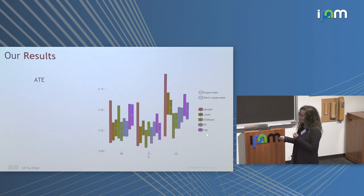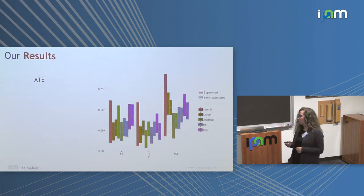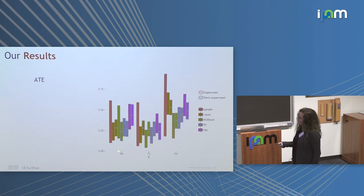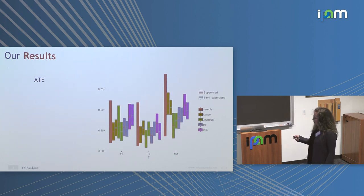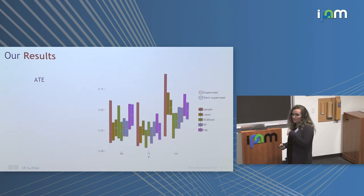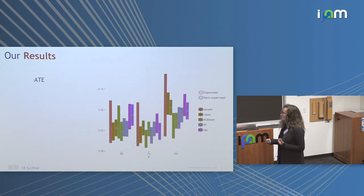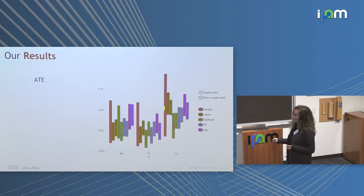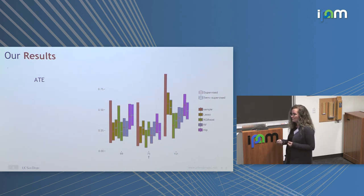Here are our results. These are confidence intervals with a red dot at the center. 'Supervised' denotes analysis done only on the small supervised dataset. Blue denotes semi-supervised — confidence intervals in the presence of additional information on X. The X-axis denotes mutation locations: 32, 69, 75, and 151. The red confidence intervals are sample-only. If a confidence interval contains zero, the mutation is not causally related to the drug — it won't affect the drug outcome.